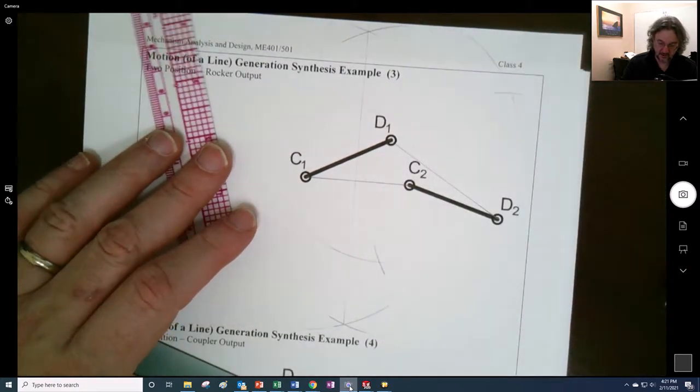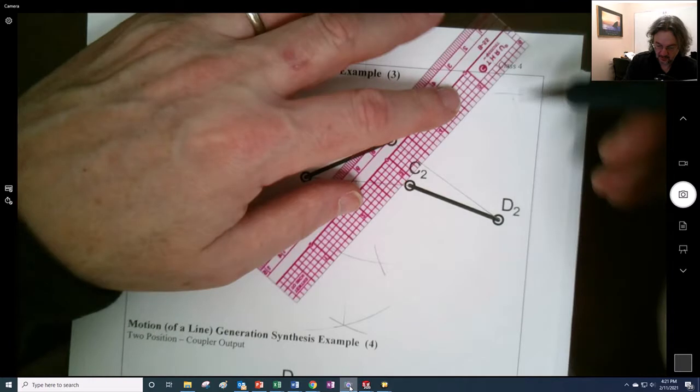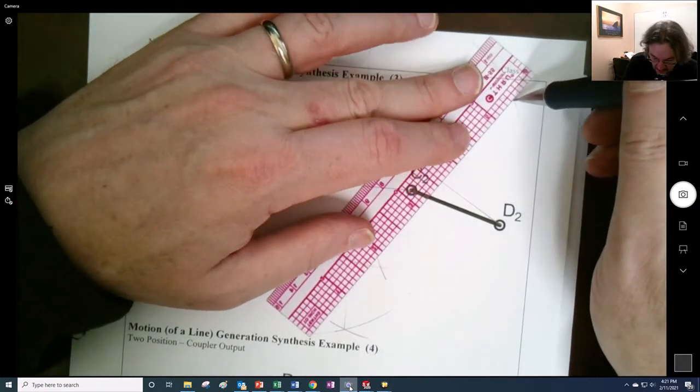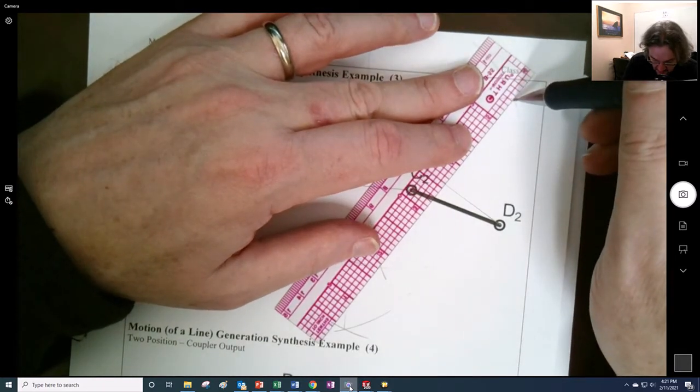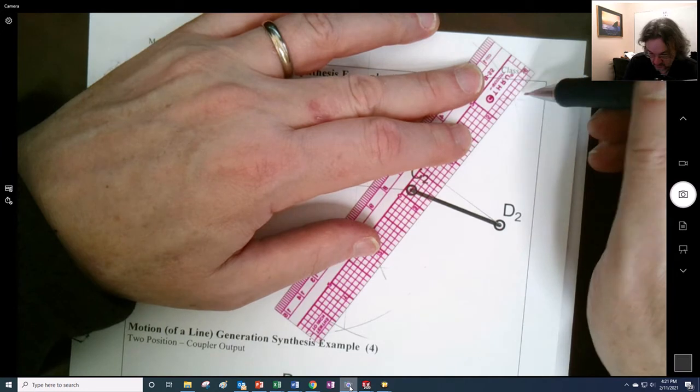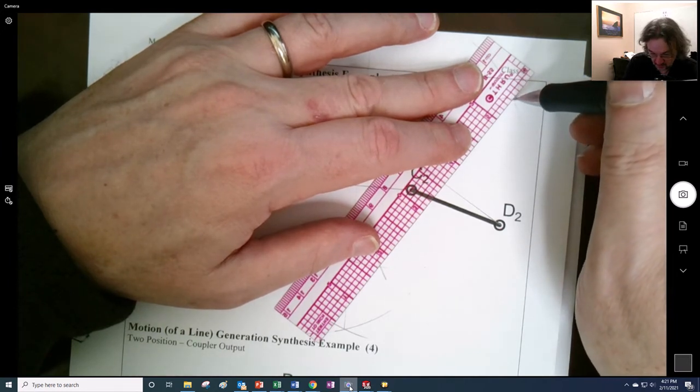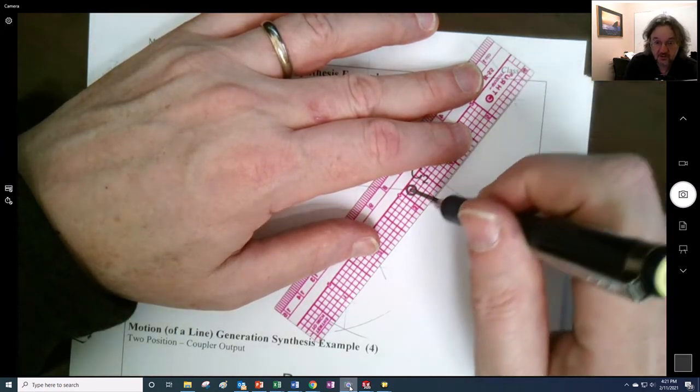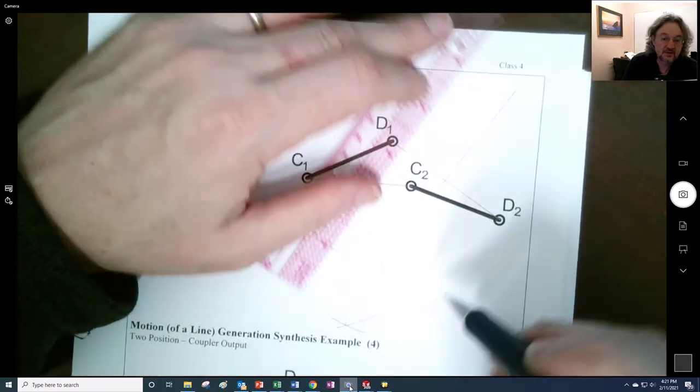And, barely got it in there. Now, you can draw a line that comes between those two. Extend it down.